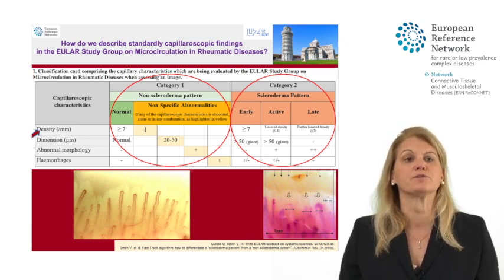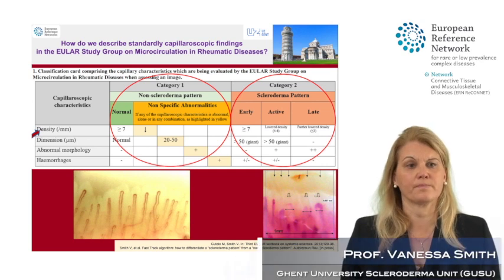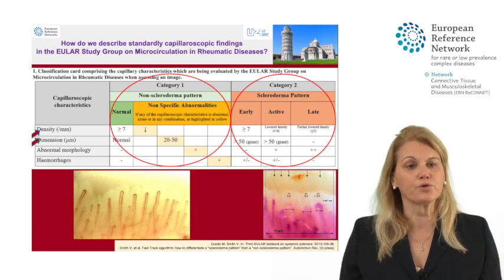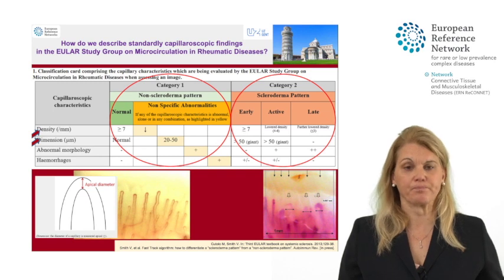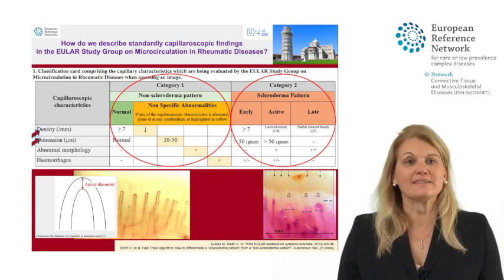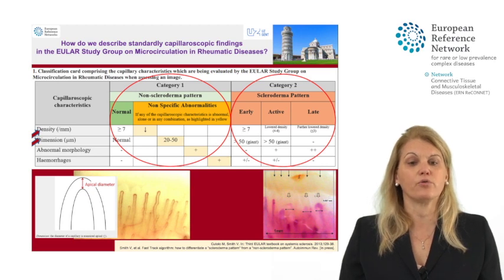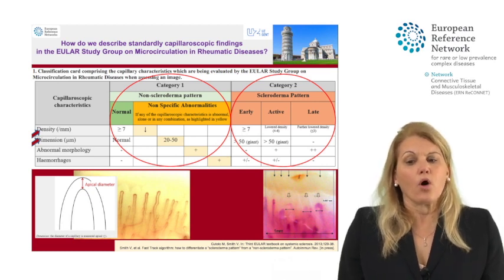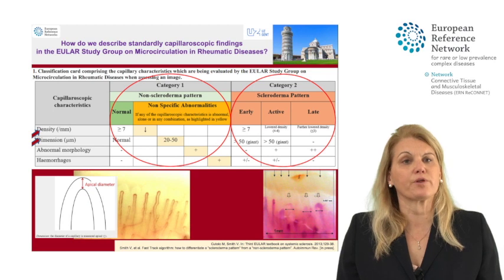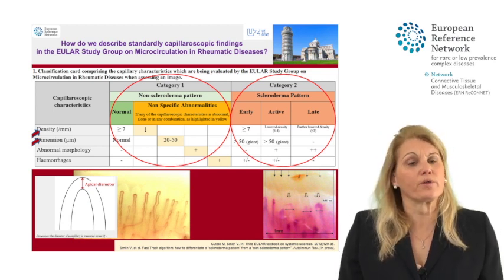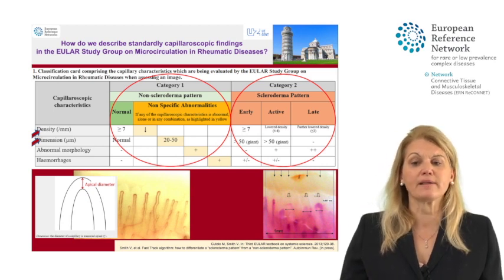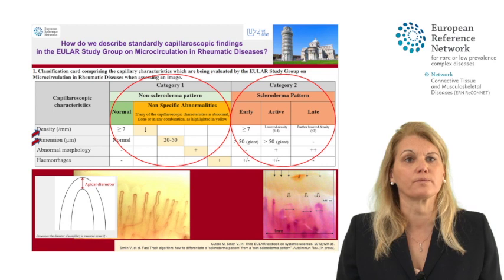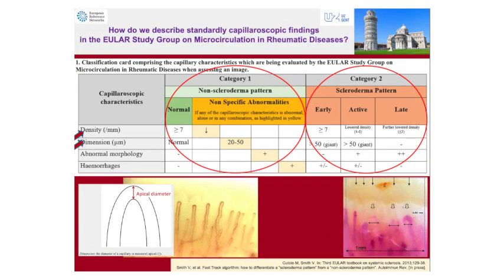This image belongs to a patient affected by systemic sclerosis. Secondly, we always evaluate the dimension of a capillary, usually measured apically. An apical diameter of less than 20 micrometers is stereotypically normal. Giants are capillaries with a normal shape and an apical diameter of 50 micrometers or more. These giant capillaries are specific for scleroderma spectrum diseases such as systemic sclerosis.